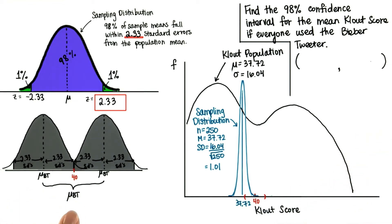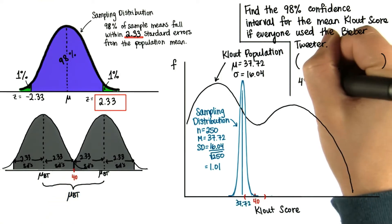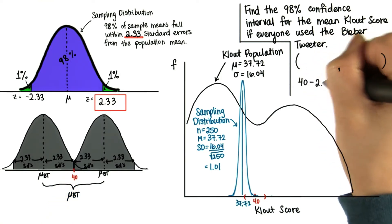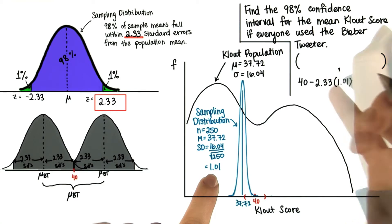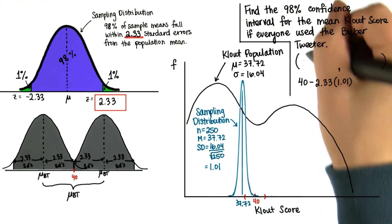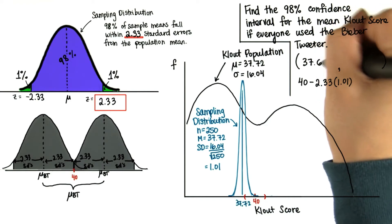And if that's the case, then mu sub bt must be, in turn, within 2.33 standard deviations of this sample mean. So the sample mean minus 2.33 standard deviations, which is 1.01, will be our lower bound for this confidence interval. So this comes out to about 37.65.